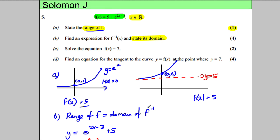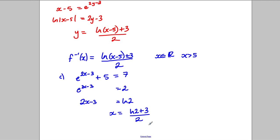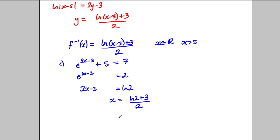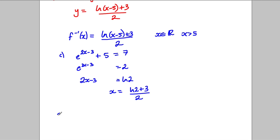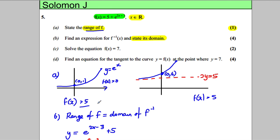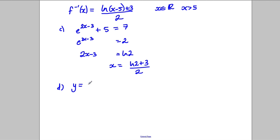And that's our solution to that part there. And lastly, find an equation for the tangent to the curve y equals f of x, where y is 7. So we know, for part d, that y is equal to, the function was e to the 2x subtract 3, add 5.